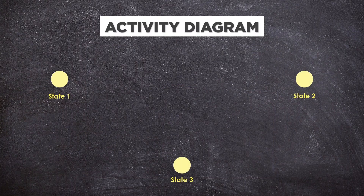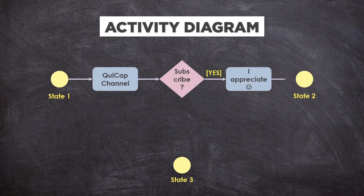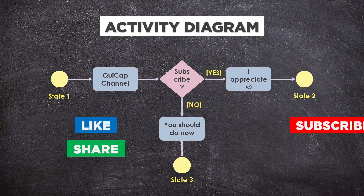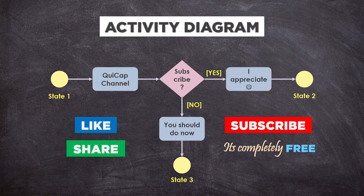Activity diagrams represent workflows in a graphical way. They can be used to describe the business workflow or the operational workflow of any component in a system. Sometimes activity diagrams are used as an alternative to state machine diagrams.